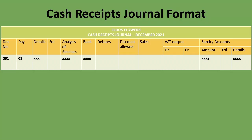The very first column is the document number, which you'll usually be given in your scenario. If not, you may create your own numbers in sequence: 01, 02, 03, and so forth. The day is the day of the month. The details column is where you put the name of the person or entity paying you or bringing money into the business. The folio is a cross-reference code — a number or combination of numbers and letters connecting two different records — so we won't worry too much about it.